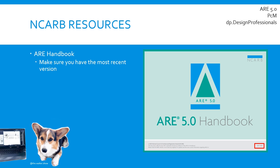You always want to start with the NCARB resources as your primary resource when looking for what you need to study for any of these exams. NCARB posts the ARE 5.0 handbook online, and before you really dig into it, make sure you have the most recent version. You can find the date in the bottom right-hand corner. This particular version is from July 2020. NCARB tends to update the handbook periodically with new resources or different questions.